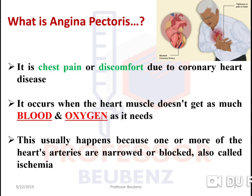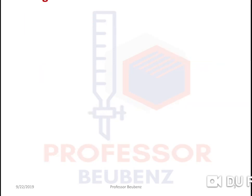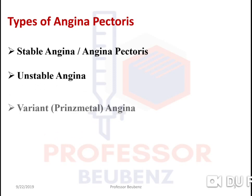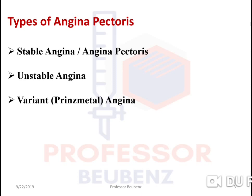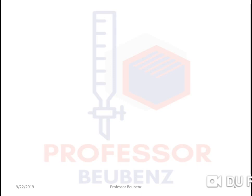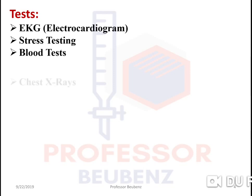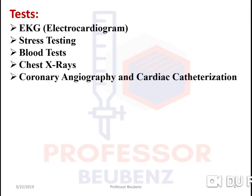This usually happens because one or more of the heart arteries are narrowed or blocked, which is also called ischemia. There are four main types of angina pectoris: stable angina (also called angina pectoris), unstable angina, variant that is Prinzmetal angina, and microvascular angina. Tests to detect angina include electrocardiogram, stress testing, blood tests, chest X-ray, coronary angiography, and cardiac catheterization.